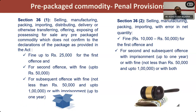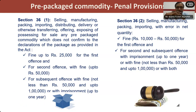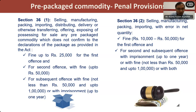Section 36 prescribes for the declaration part. When declarations are not correct or not made — for example, the country of origin is not mentioned on a prepackaged commodity — the first offense can be compounded at 25,000 rupees. Similarly, non-declaration of MRP, or non-declaration of month and year of manufacture — these are important declarations. The first offense can be compounded by paying 25,000 rupees to the government officer. The second offense may be up to 50,000 rupees. If even after the second offense a third offense happens, the compounding can be 50,000 to 1 lakh rupees.